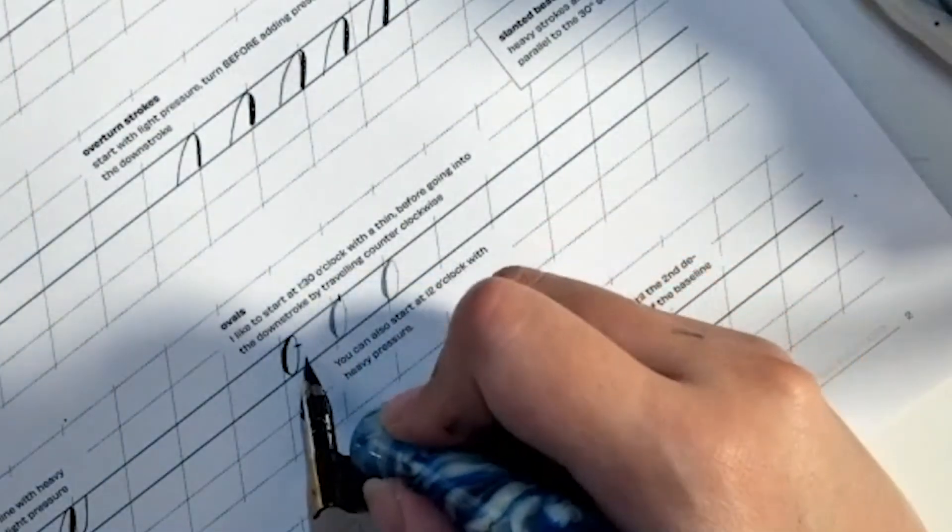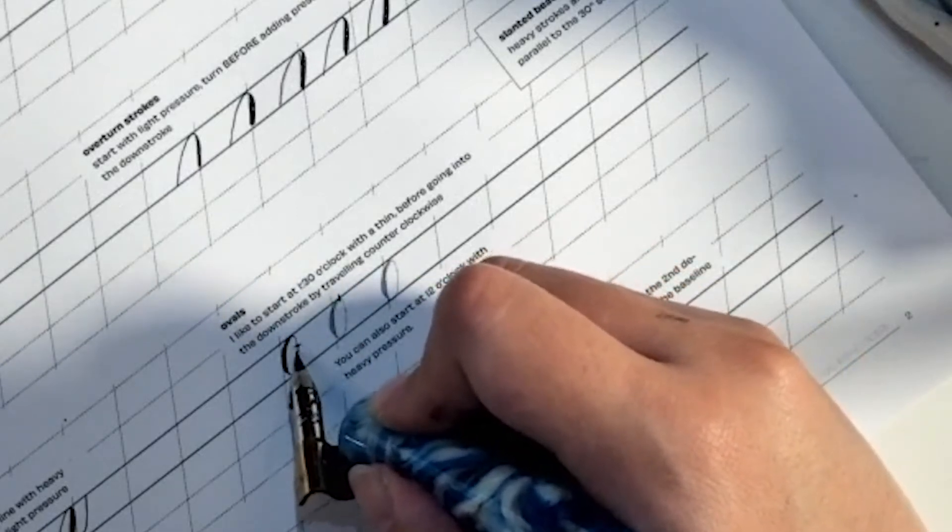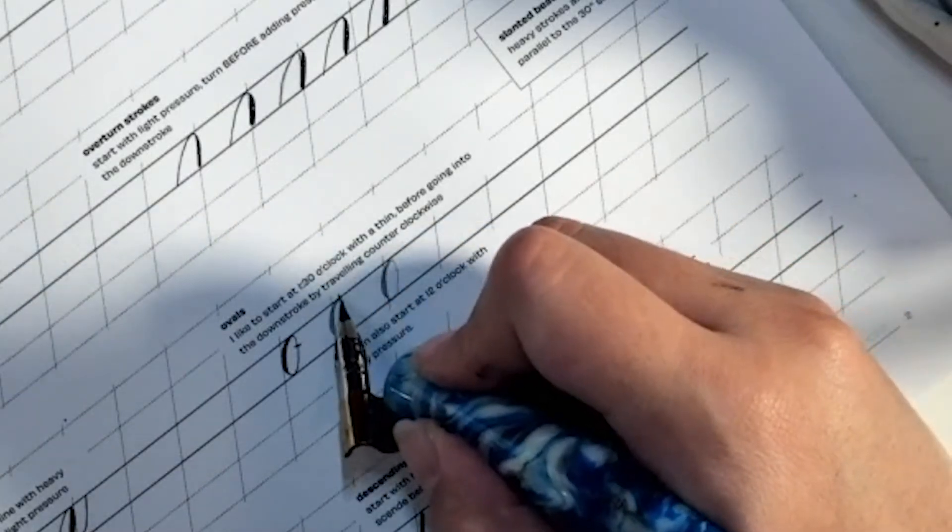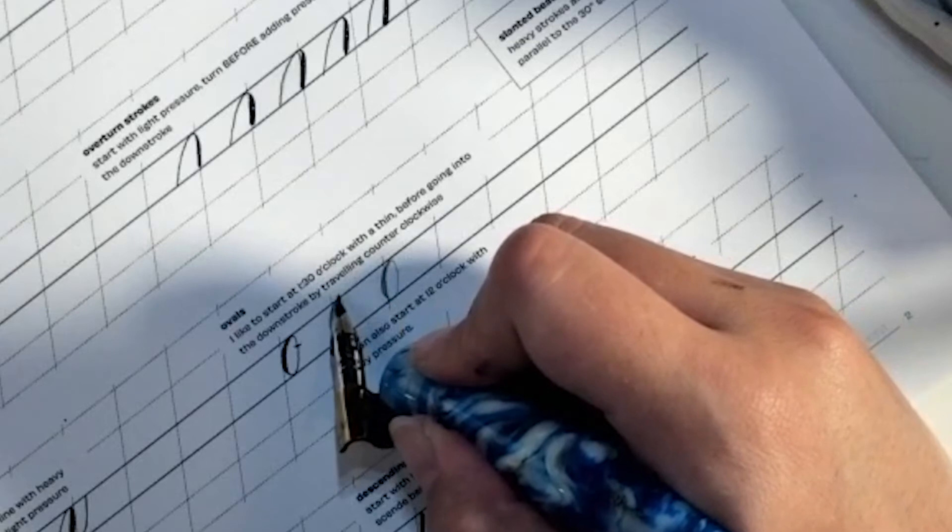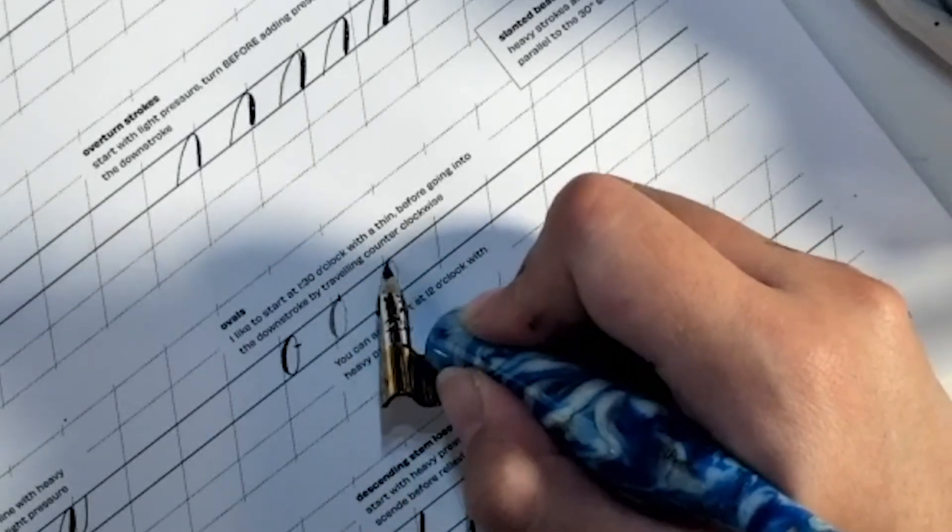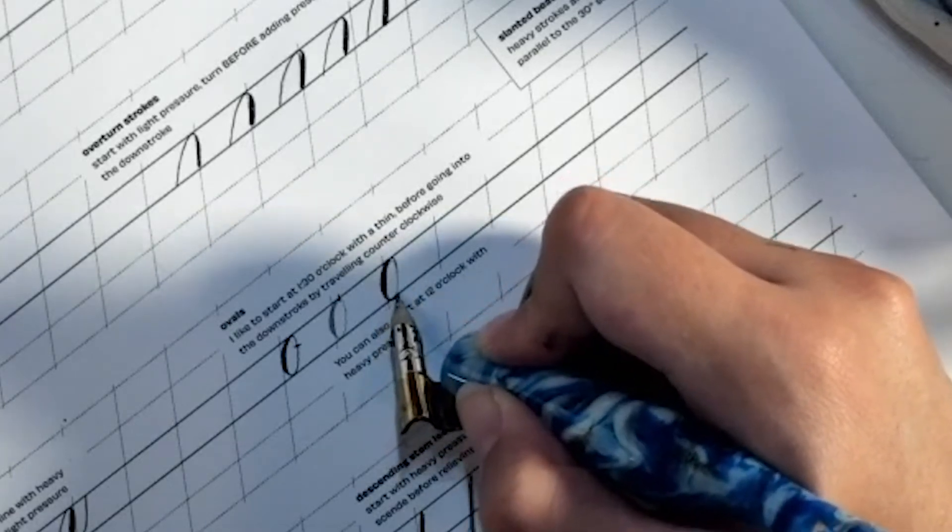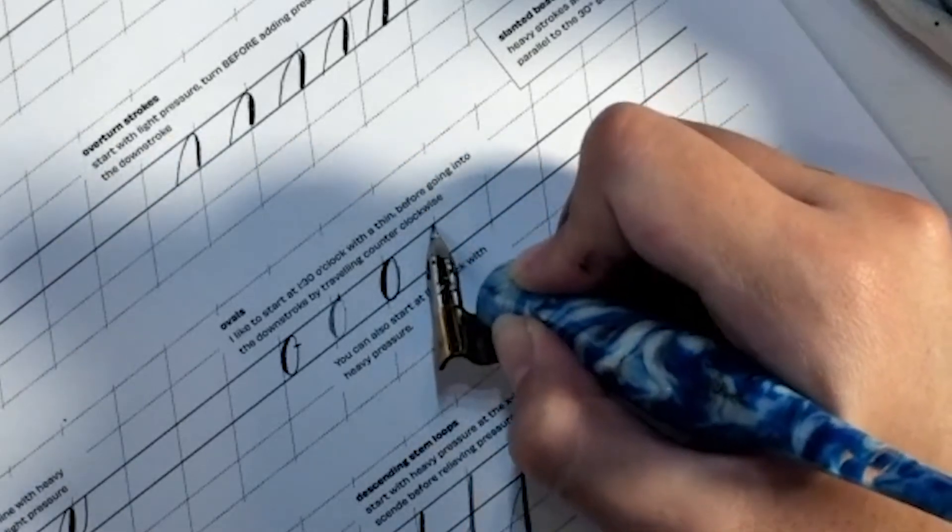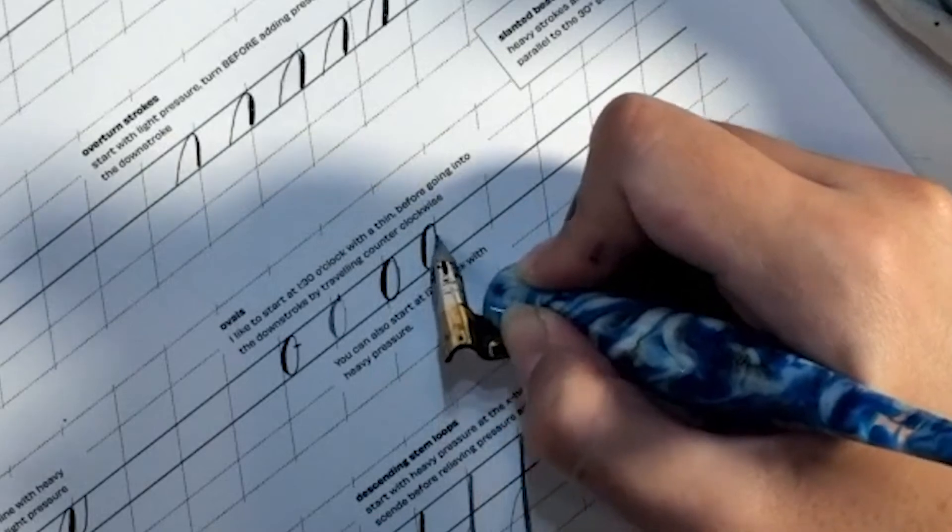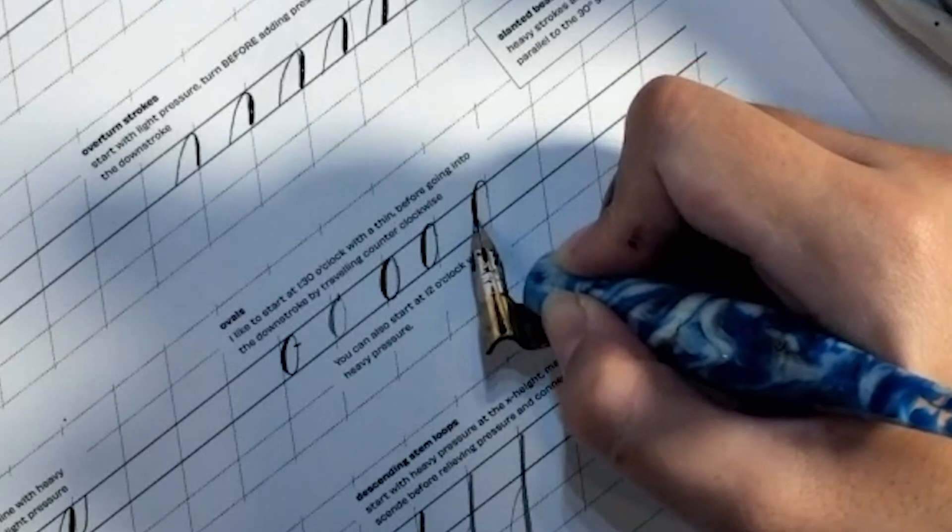This is the oval. And I tend to like starting at like one, one thirty, one o'clock, two o'clock. And then I go around. A lot of other people tend to do like from midnight going the other way. So I like to start from that section and then I go counterclockwise. And then I go up and then I add pressure, relieving pressure, and then I come back around. The trick with these is that you're going to be relieving pressure before you get back up. So try to keep these pretty light. You're only adding pressure up the middle of the stroke.